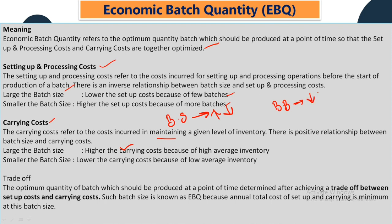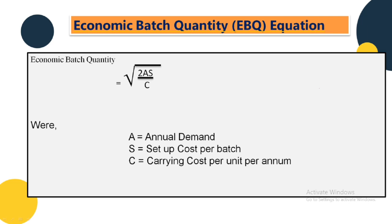We optimize these two costs by making a trade-off: as batch size increases, carrying cost increases but setup cost per unit decreases. We calculate the Economic Batch Quantity, or EBQ, to find the optimum quantity. The EBQ formula is: EBQ = √(2AS ÷ C), where A is annual demand, S is setup cost per batch, and C is carrying cost per unit per annum.